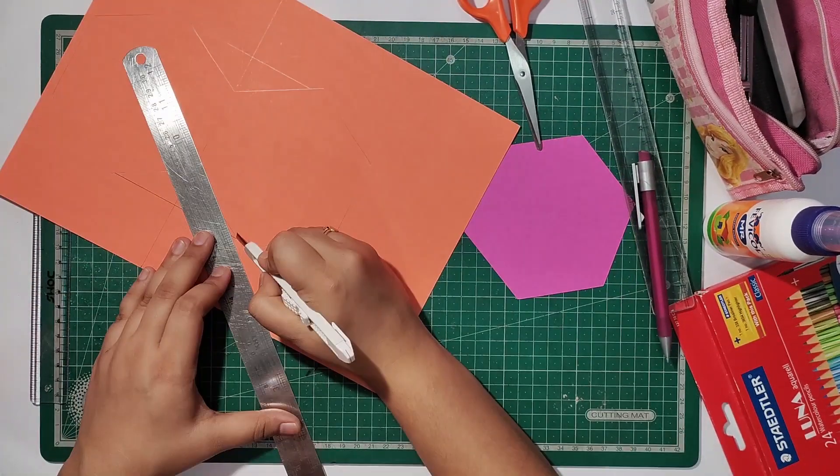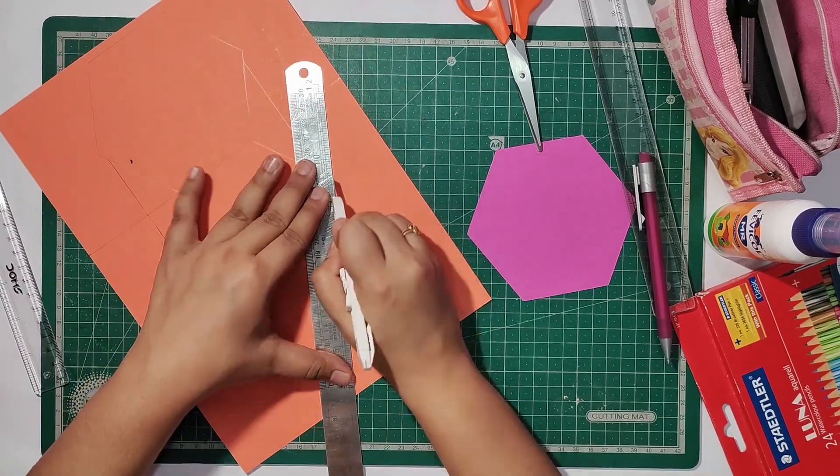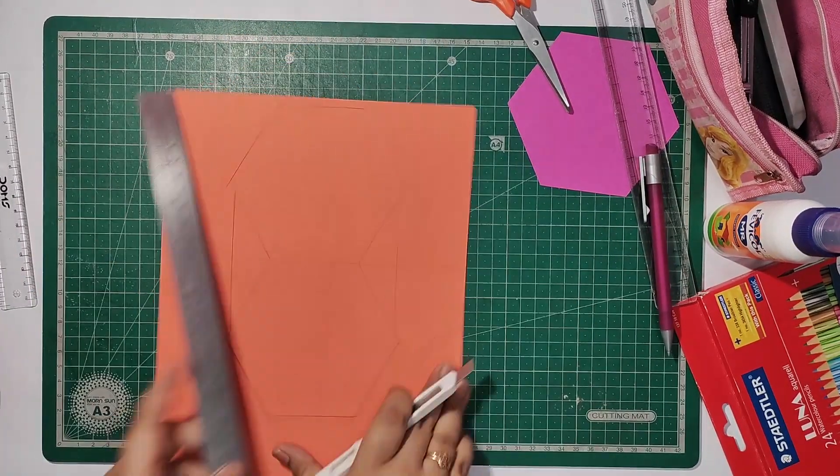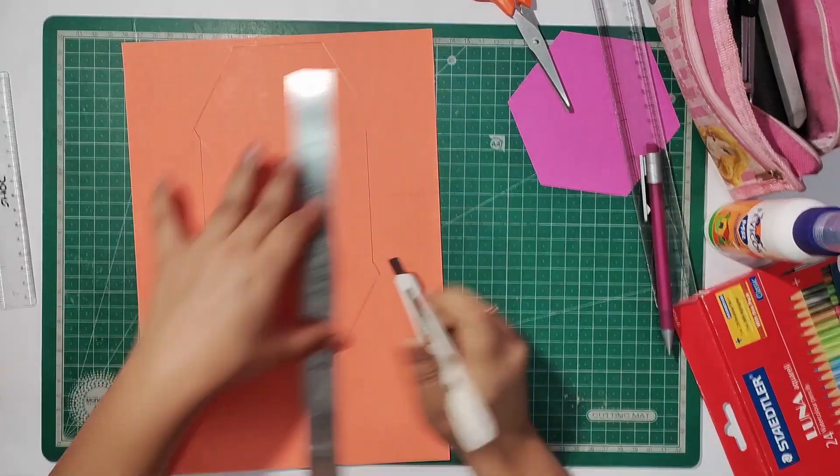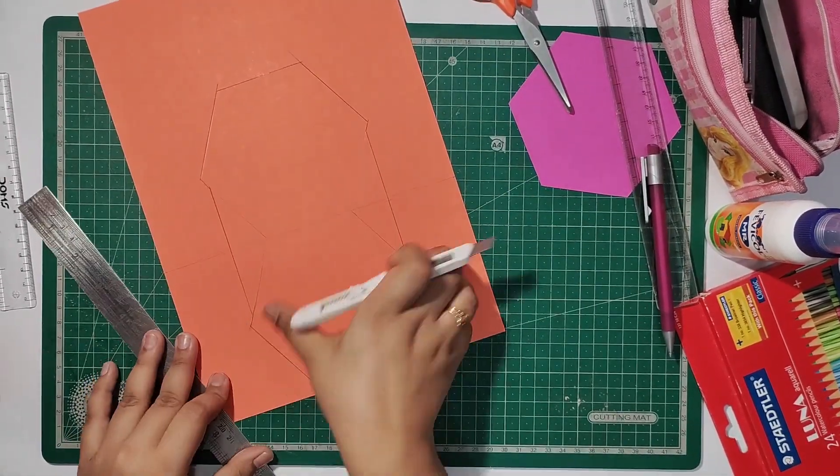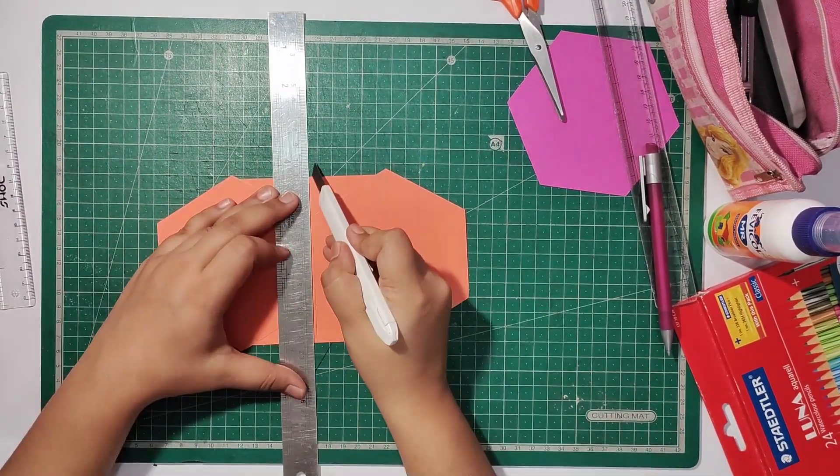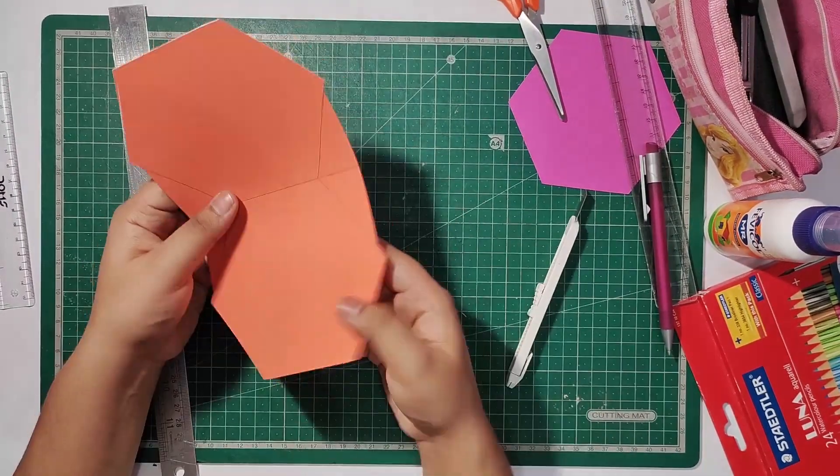Now we will cut the shape and remove it. We will make a half cut in the folding area so that we can fold the card properly.